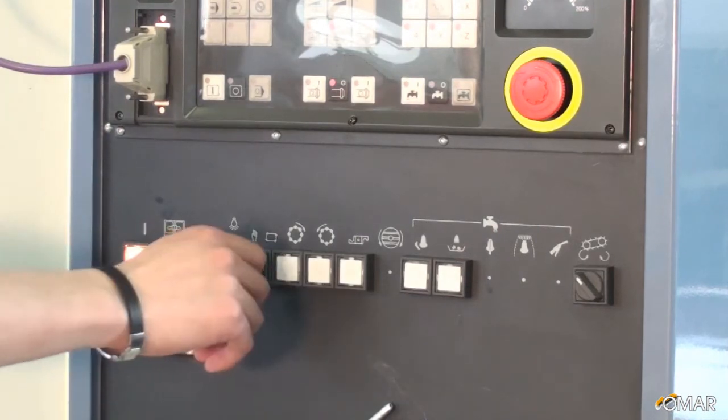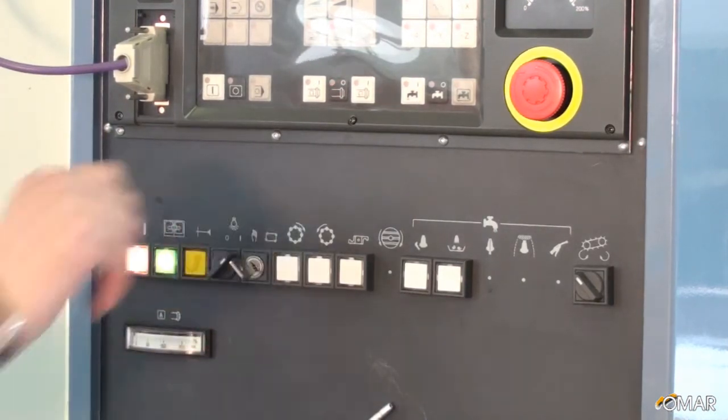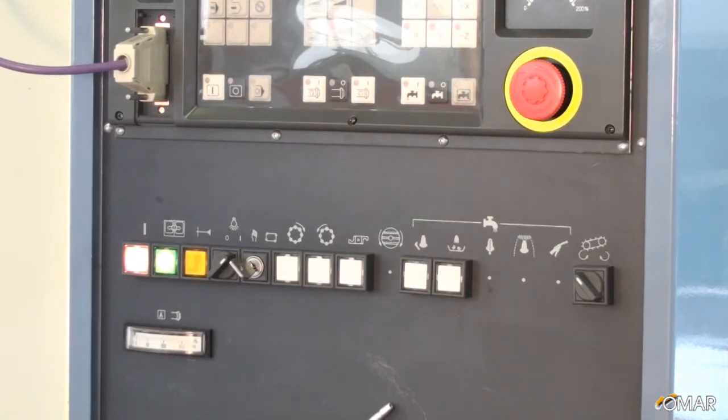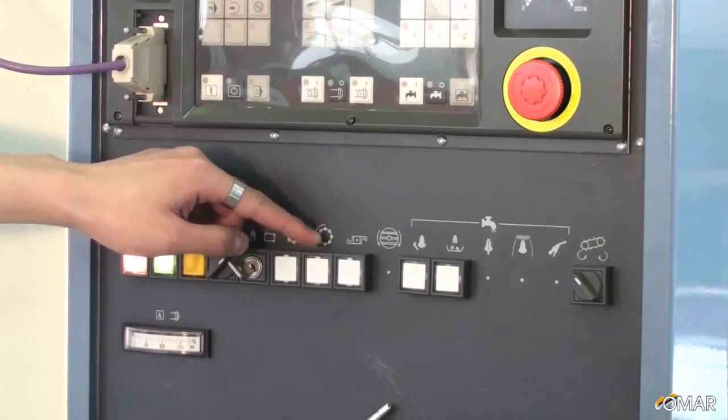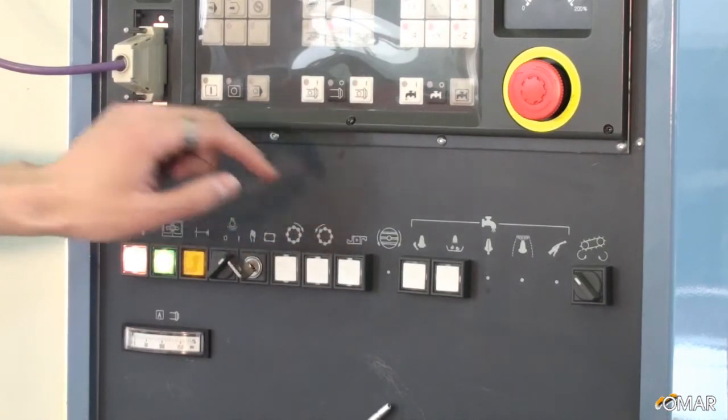The fifth button is a key switch to select either manual or automatic working mode. The other three buttons move the tool warehouse and the arm for the tool changing.